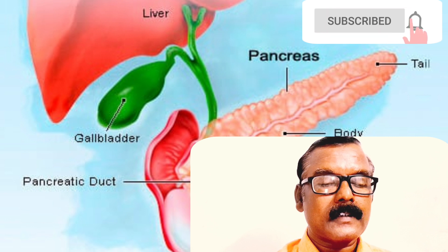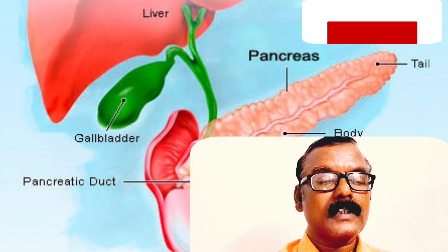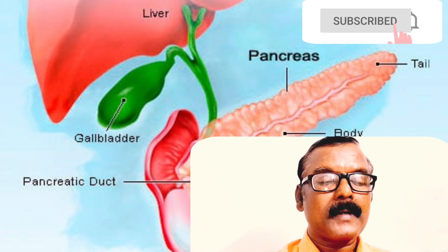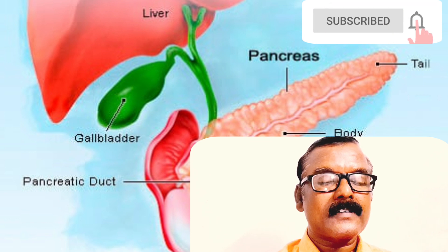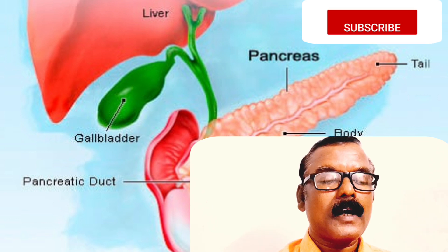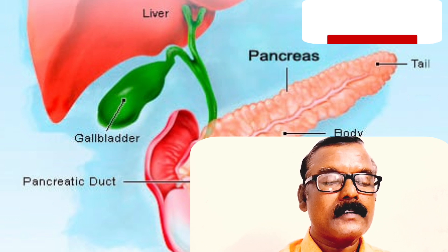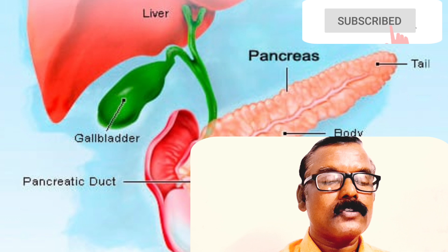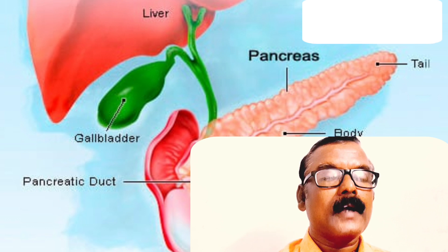The pancreas has an exocrine function because it releases juice into ducts. Enzymes and juices are secreted by the pancreas into the small intestine, continuously breaking down food that has left the stomach. The pancreas also produces the hormone insulin, secreted into the bloodstream, where it regulates the body's glucose or sugar level. Problems with insulin control can lead to diabetes.